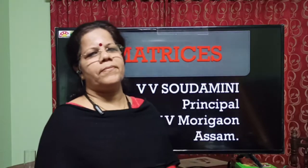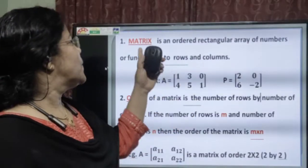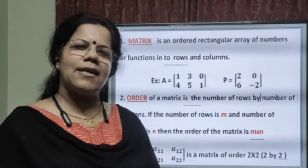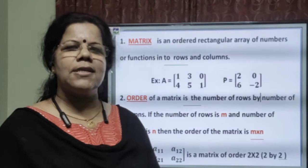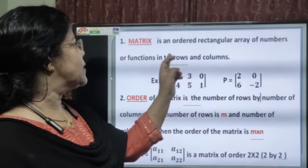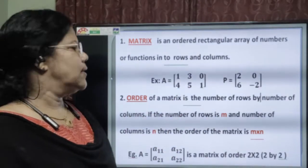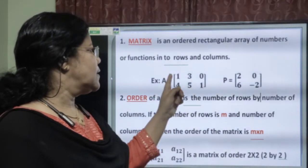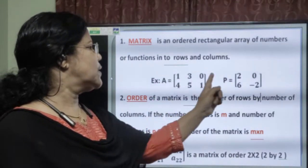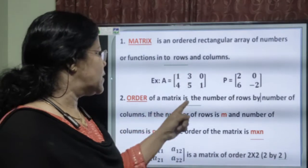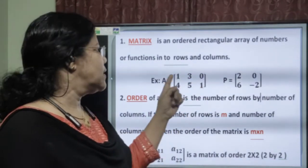Let us go directly to the definition of a matrix. A matrix is an ordered rectangular array of numbers or functions arranged into rows and columns. Here, in an example, the horizontal ones are known as rows and the vertical ones are columns.